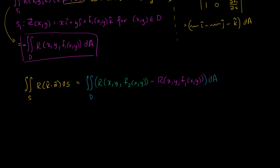So this is the triple integral over our region, which we're assuming is a type 1 region, of the partial of r with respect to z. And I'll write dv.